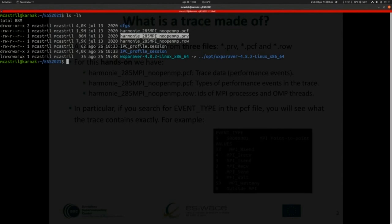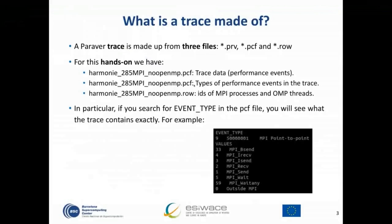It's better not to open the PRB with a text editor because it contains a lot of data — this is the file that should be opened with Parabert. The second file is the PCF, which is very important because it is the metadata of the trace. Our main interest there is on the types of performance events in the trace.